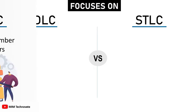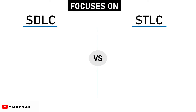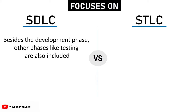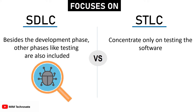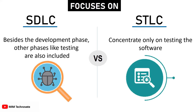Focuses on: In the Software Development Life Cycle, besides the development phase, other phases like testing are also included. Whereas the Software Testing Life Cycle concentrates only on testing the software.